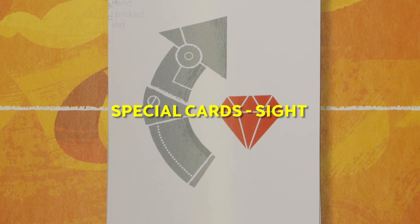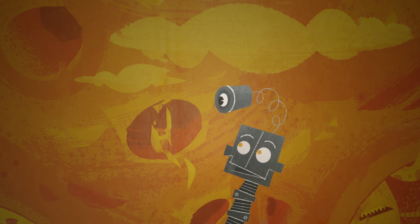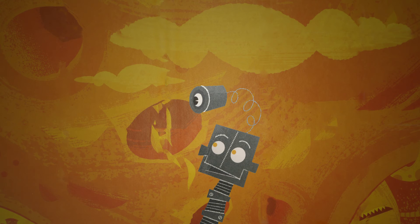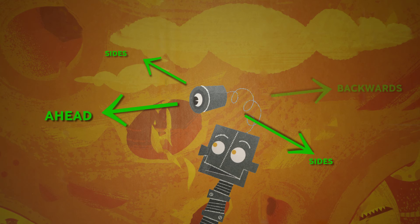With a special sight card, you can activate the robot's eyesight and make things more straightforward. Your robot now has the ability to see straight ahead to both sides and backwards.